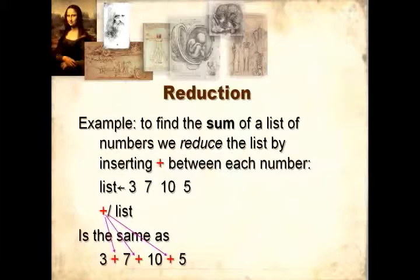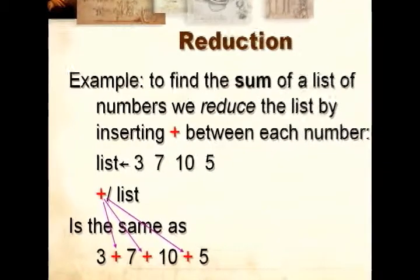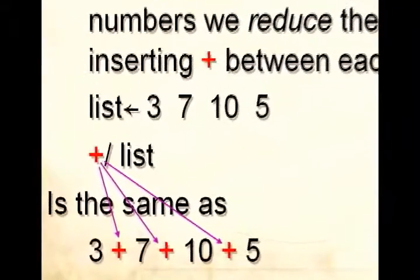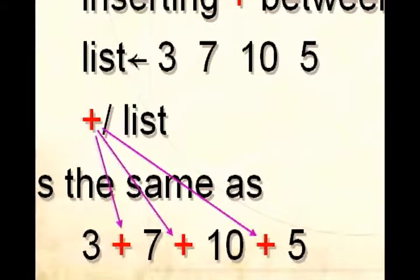If the list is 3, 7, 10, 5, plus slash list is the same as doing 3 plus 7 plus 10 plus 5.